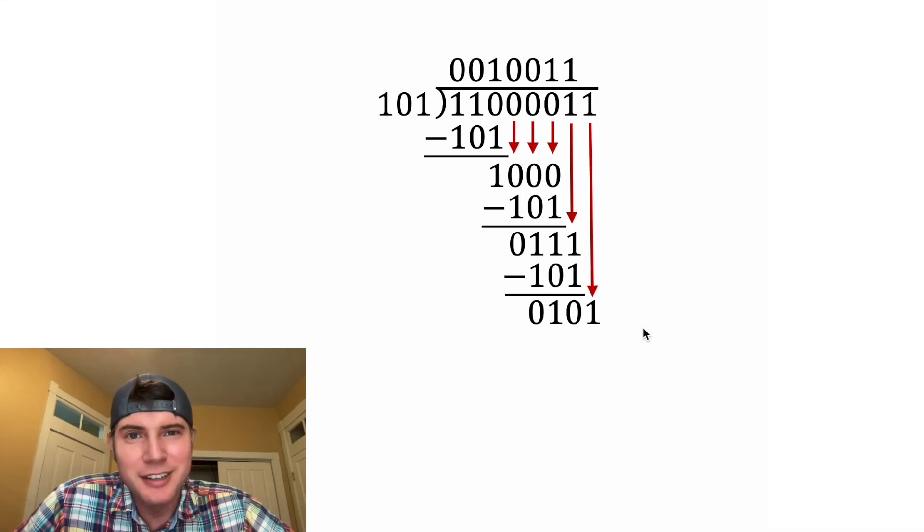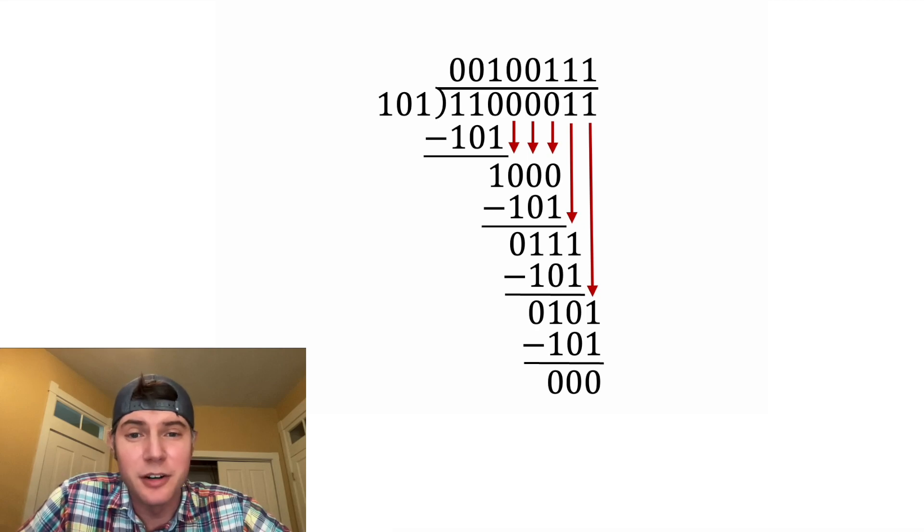And now we can bring down the last 1. How many times does 101 go into 101? That's exactly 1 time. And then we can multiply these and subtract. Now we're left with a bunch of 0s.